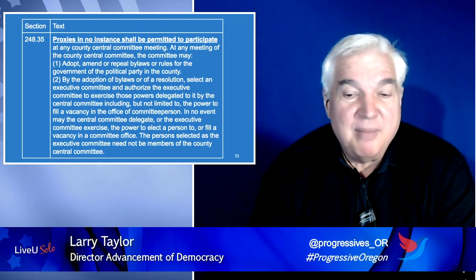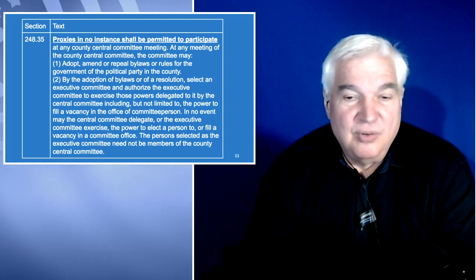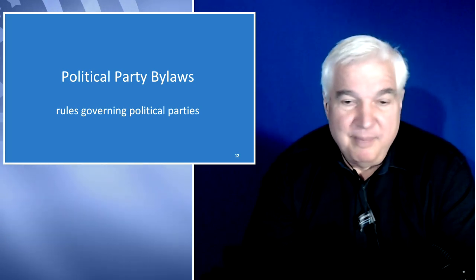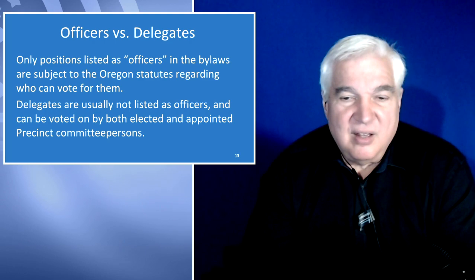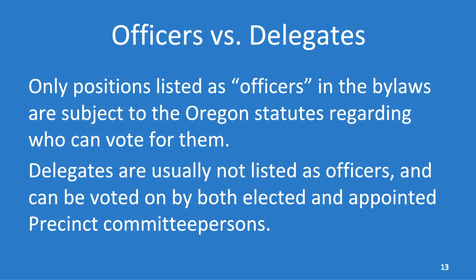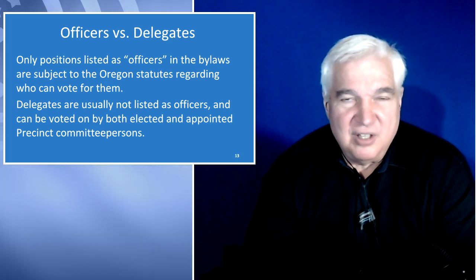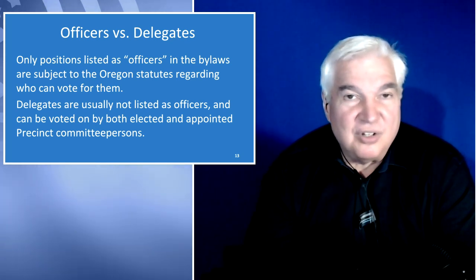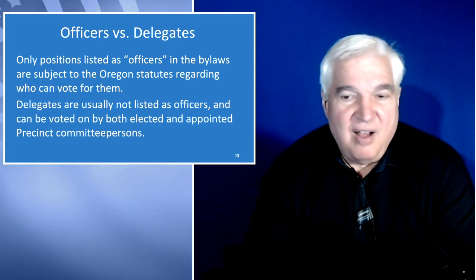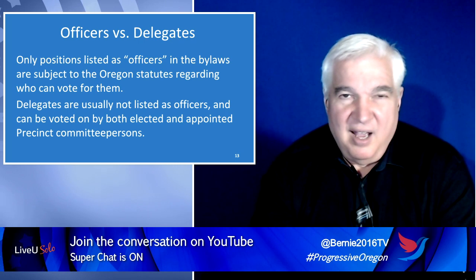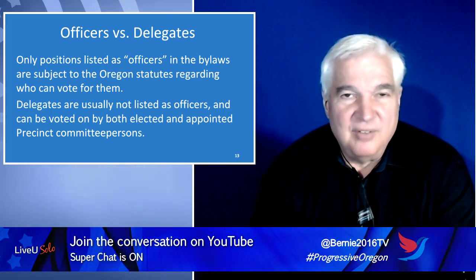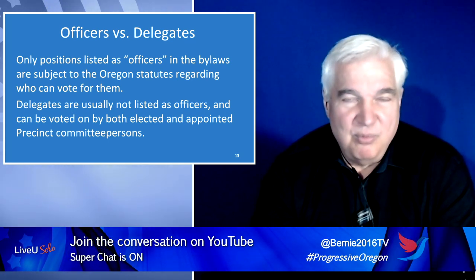The next section is on political party bylaws. You have to be clear on the distinction between officers and delegates because they tend to be elected at the same time. Officers are listed in the bylaws under a section called 'officers.' Delegates are usually not listed under officers — in the Clatsop County bylaws, there's actually no reference to delegates in the bylaws themselves, so all guidance comes from the Democratic Party of Oregon for whom we elect them.